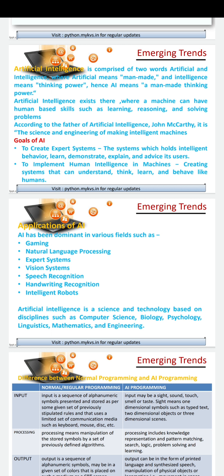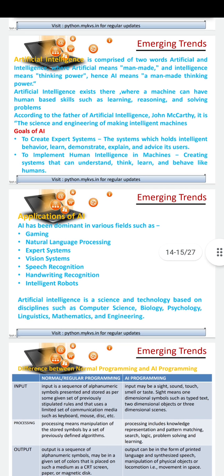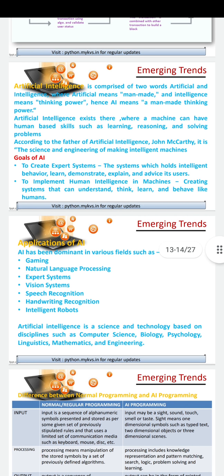Who is the father of artificial intelligence? John McCarthy. According to him, AI is a combination of science and engineering. It is used by engineering to make objects, and it uses science, learning, reasoning, and problem-solving skills. That is what artificial intelligence is.